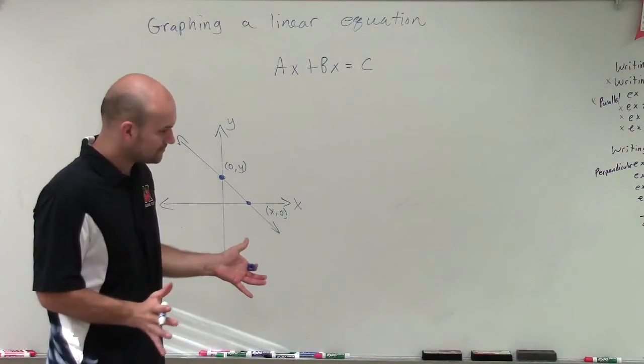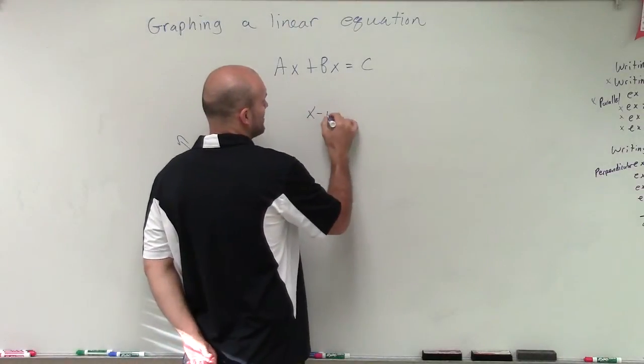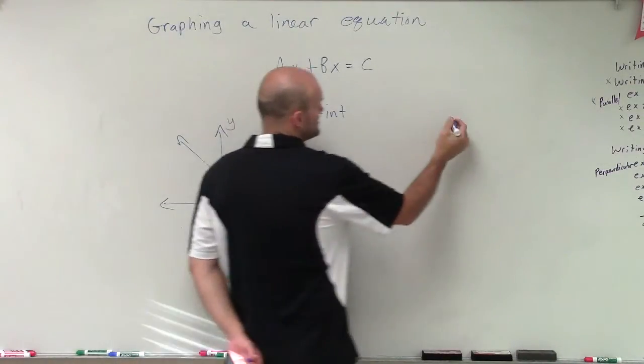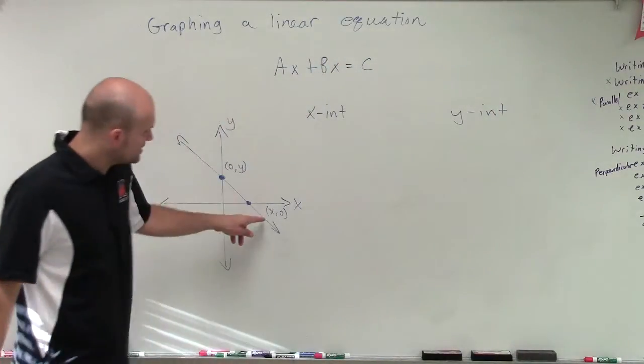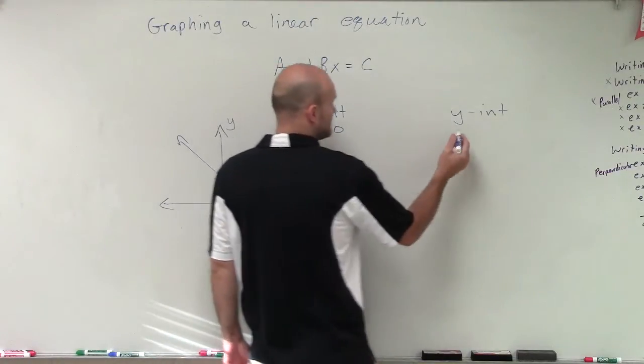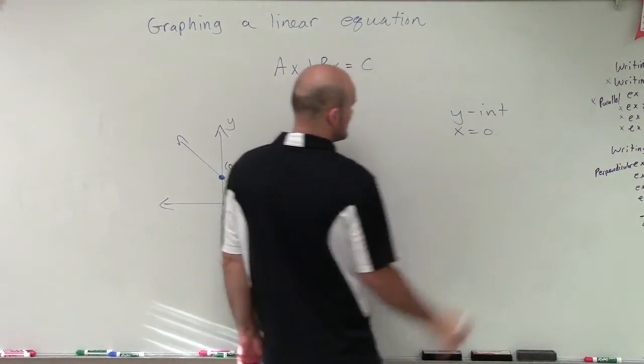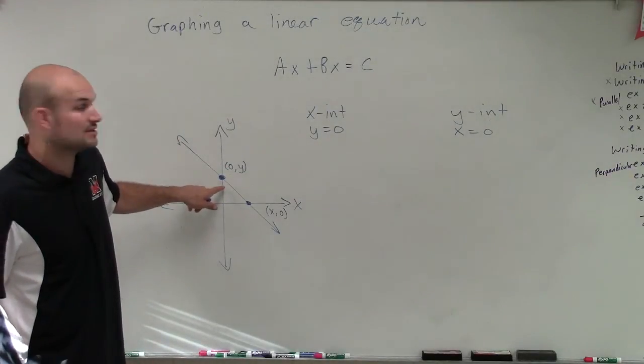Because when I'm going to be graphing using my x and y intercepts, what I'm going to do is I'm going to want to determine what the x-intercept is and what the y-intercept is. And what I notice about the x-intercept is that y equals 0. When you look at the y-intercept, you notice that the x-value is equal to 0.